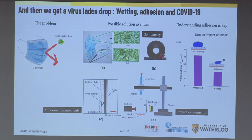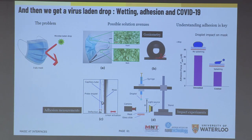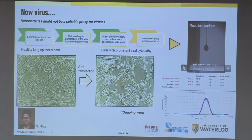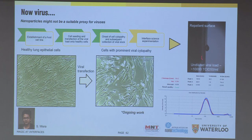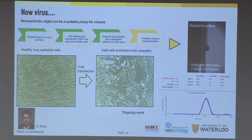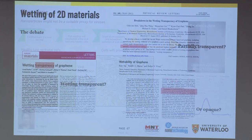We also looked at wetting in terms of face masks, and during the COVID period we studied human coronavirus 229E — a surrogate for COVID — creating a human lung epithelial cell line, inducing cytopathy, infecting with the virus, and looking at how the virus interacts with repellent surfaces. We expanded this technique even to moderately philic surfaces, though due to time constraints I won't go into details.